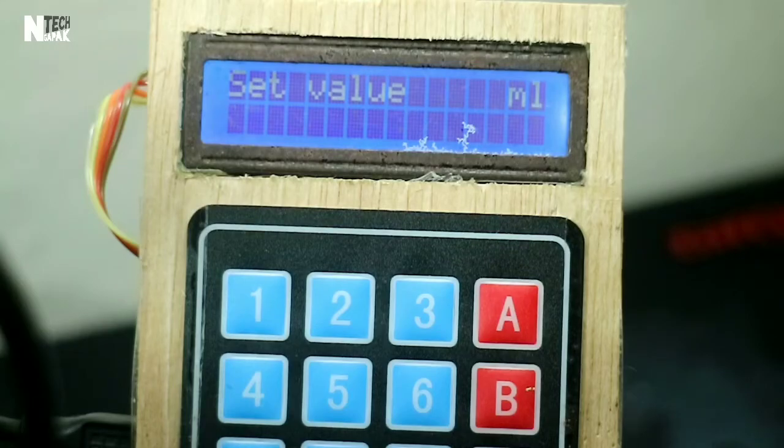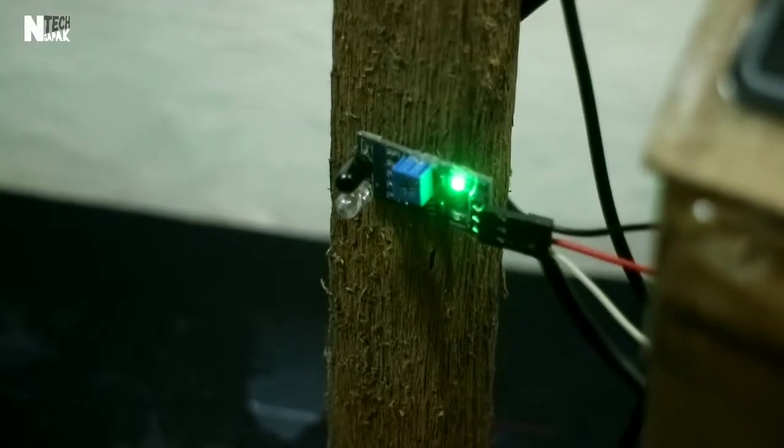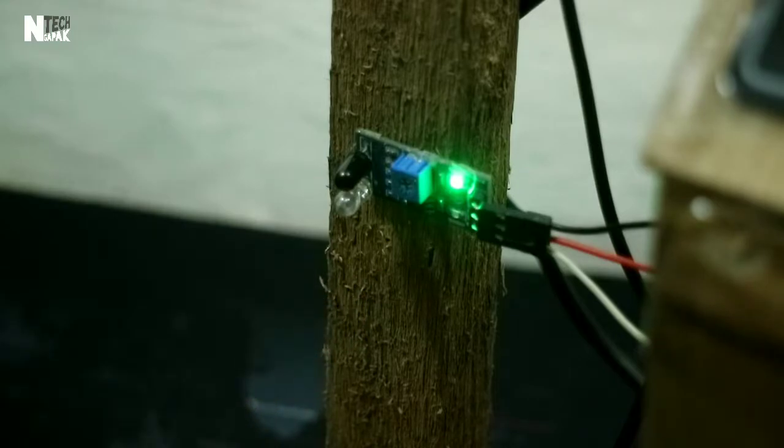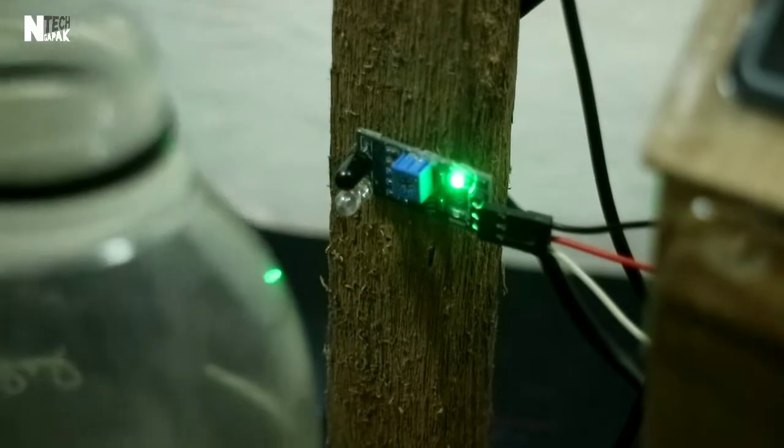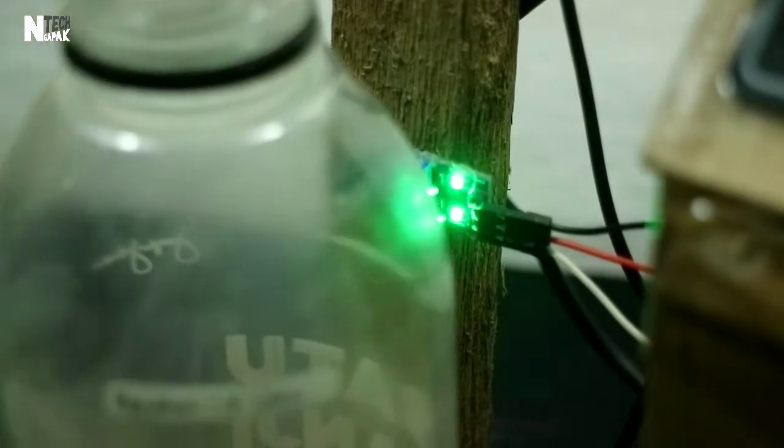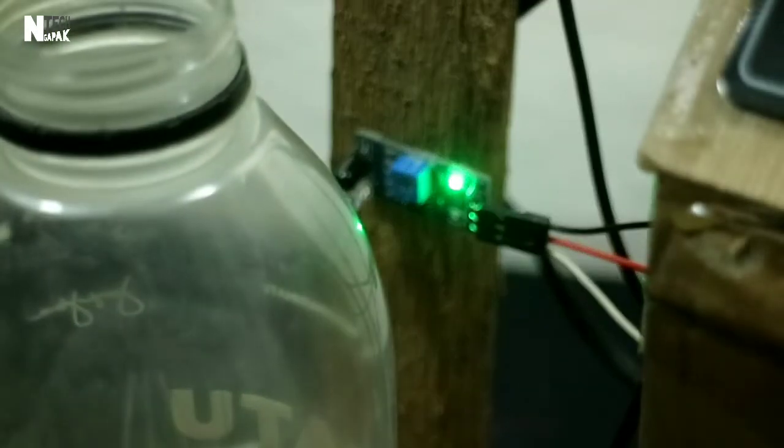Let's stir it first until it's even. Okay. Then we turn it on. Here there's a set value display - we can set up to 9.99 liters or 10 liters. Let's calibrate the sensor first. See, it has to be close like this. If the distance is like this, it won't work because this distance is right under the nozzle.